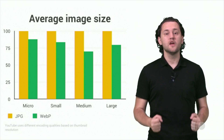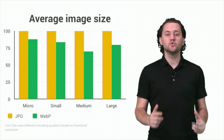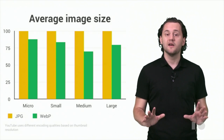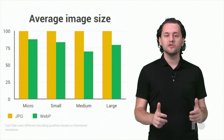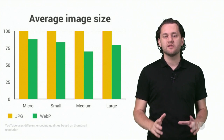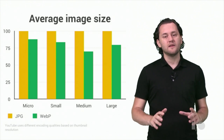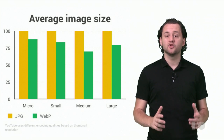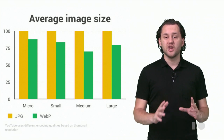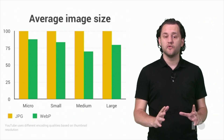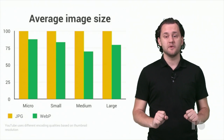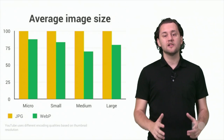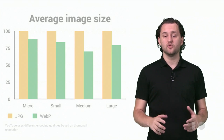Based on this result, we decided to start encoding new thumbnails in WebP along with JPEG. And as a result, WebP currently contributes to over 10% of all YouTube image traffic, saving terabytes of bandwidth every day. We expect it to become as popular as JPEG in the near future, especially as we enable it on our iOS client, TV and console clients, and allow third parties to use it too.